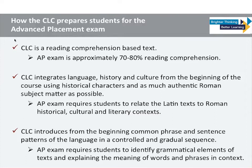It's set in the context of the Roman Empire, and those historical characters are frequently introduced. Unit 1 is based on the familia of Lucius Caecilius Iucundus, whose house and business records survive in Pompeii in the first century AD. Unit 2 is set in Roman Britain and Roman Egypt, and Unit 3 is set in the city of Rome. The AP exam requires students to relate the Latin texts to the Roman historical, cultural, and literary context. CLC also introduces from the very beginning common phrase and sentence patterns of the language in a very controlled and gradual sequence.